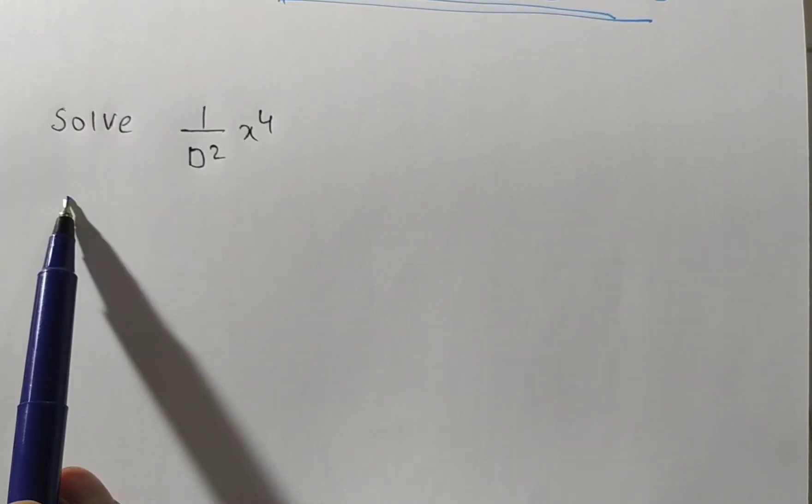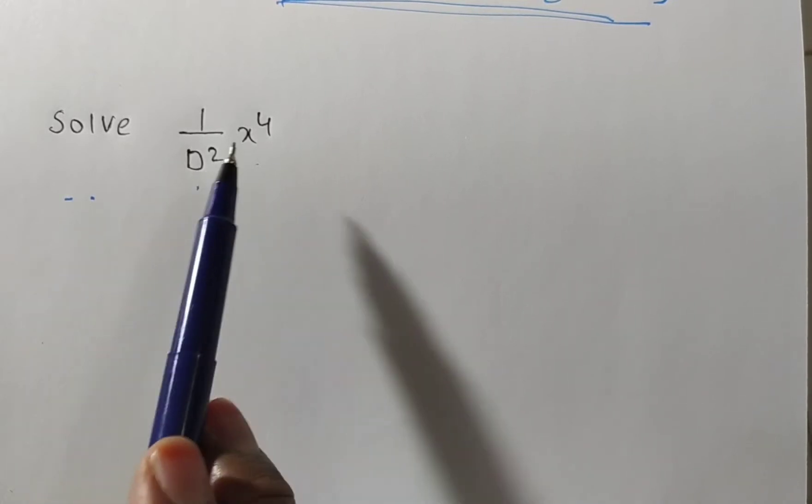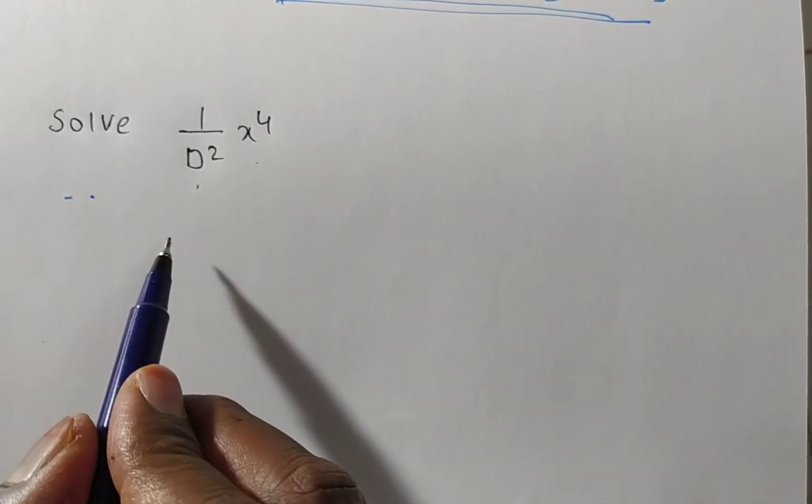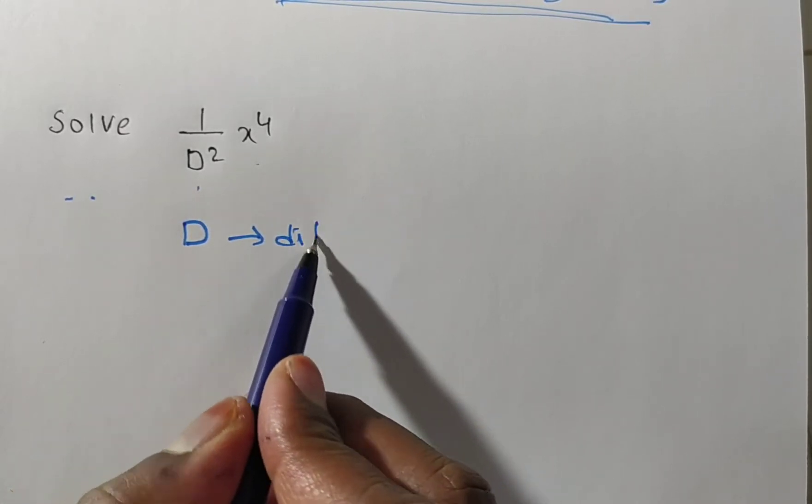Friends, here the given problem is solve 1 by D squared x to the power of 4. We know that D is called the differential operator.